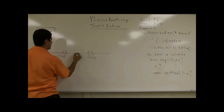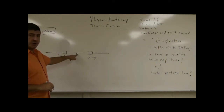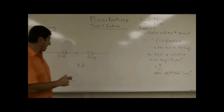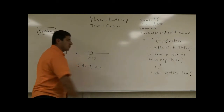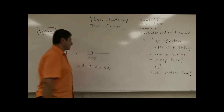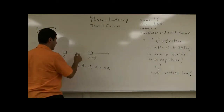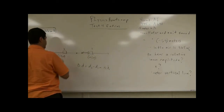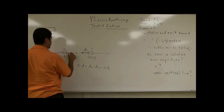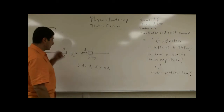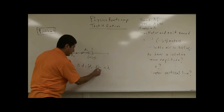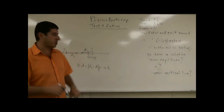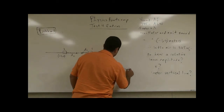The criterion for constructive interference is that the difference in distance traveled by the two waves — d2 minus d1 — equals an integer multiple of the wavelength: |d2 − d1| = nλ. So if waves travel to a certain spot, the first speaker contributes distance d1 and the second speaker contributes distance d2. Taking the absolute value of their difference, if it's an integer multiple of the wavelength, that creates constructive interference.